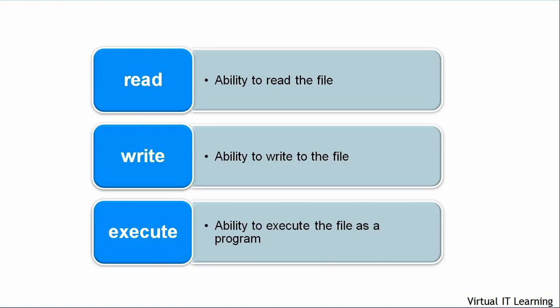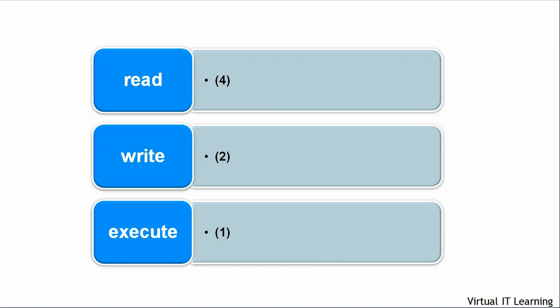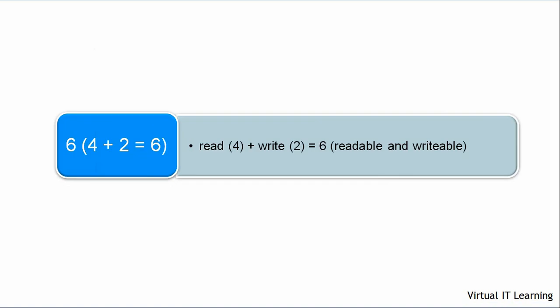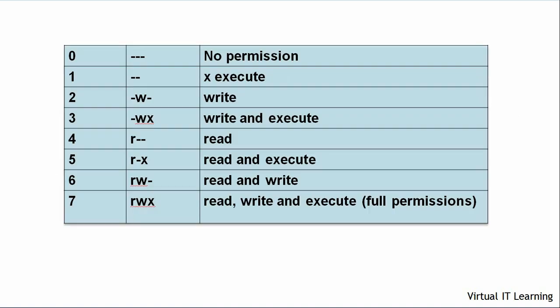For each of these three categories there are three different permissions to control access: read, write, and execute. Read gives the ability to read the file, write gives the ability to write to the file, and execute gives the ability to execute the file as a program. Each permission has an associated octal number: read is 4, write is 2, and execute is 1. To make a file both readable and writable you use the value 6, which is 4 plus 2, assigning both read and write permissions.